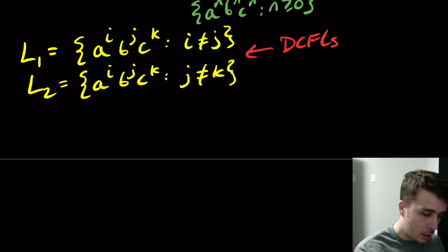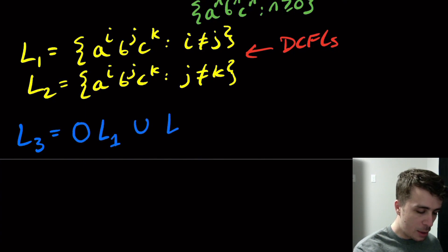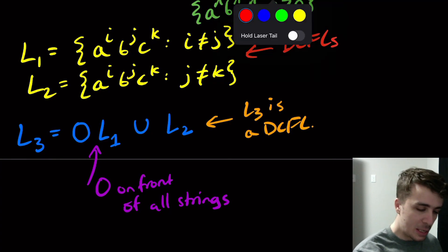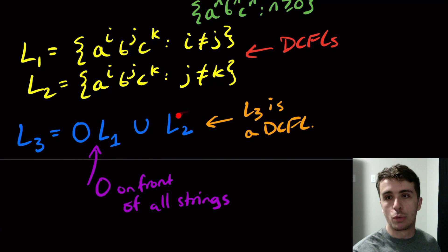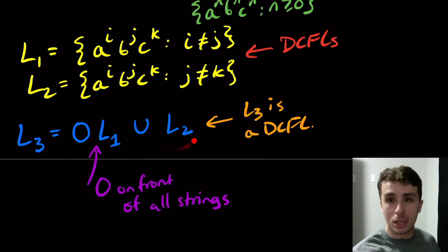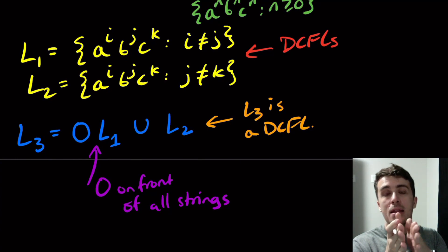So then I'm going to actually make a different language here, which is going to be L3, which is going to be 0 L1 union L2. And this notation here means 0 on the front of all strings. And I claim that L3 is a DCFL. And the reasoning is the 0 helps us distinguish which of L1 and L2 we are in. If it was just L1 union L2, then it turns out that that's not even a DCFL. But because I put this 0 on the front, if I see the 0 as the first character, then I must be in the L1 case. And if I don't see a 0 first, then I must be in the L2 case.